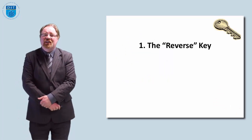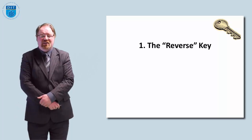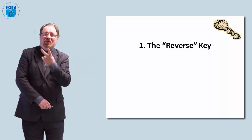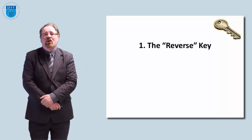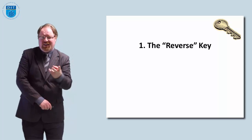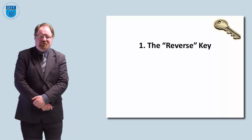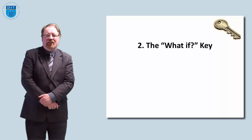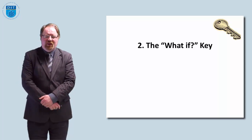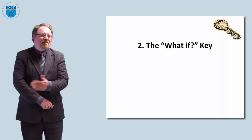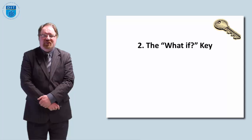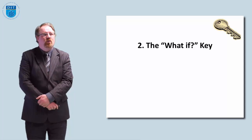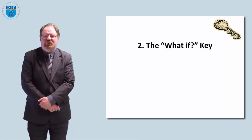So the first key is the reverse key. What the reverse key says is, swap the idea around. What should I do instead of not to? What have I never seen instead of what I have seen? The second key, number two, is the what if key. What if there were eight days of the week instead of seven? What if wheels were square instead of round?